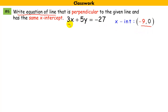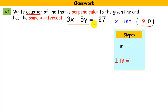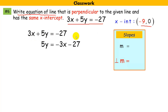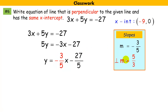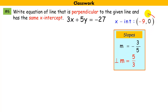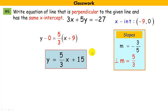Now I need the slope of the line I want — it's perpendicular to the given line. I convert the given line to slope-intercept form by subtracting 3x and dividing every term by 5, revealing a slope of negative 3 over 5. The perpendicular slope is the opposite reciprocal: 5 over 3. With that slope and the point (−9, 0), I use point-slope form and a little algebra to get y equals 5 over 3x plus 15. Hope this helped — happy studying!